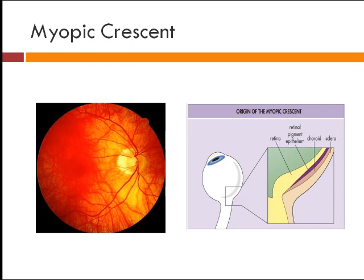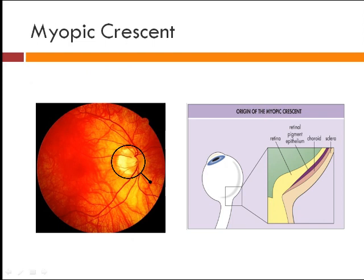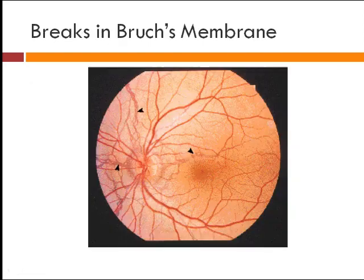What are the signs seen in pathological myopia? This picture shows a fundoscopy. You can see choroidal vessels alongside the retinal vessels because the retina is very thin due to stretching. The important finding to note is the myopic crescent — shaped like a moon, it occurs due to overstretching of the retina. This area is devoid of retina, and you can see the underlying sclera through it. In cases of extreme stretching, Bruch's membrane suffers breaks.